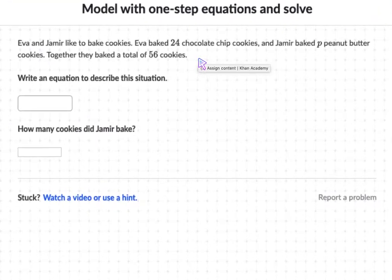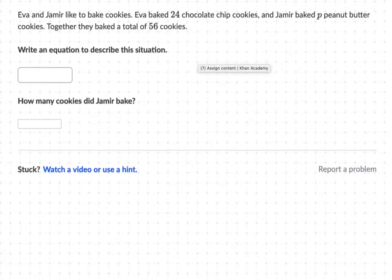Alright, here is our first example. In this problem we have Eva and Jameer baking cookies. Eva baked 24 chocolate chip cookies and Jameer baked peanut butter cookies. Together they baked a total of 56 cookies. You have to write an equation to describe the situation and you have to figure out how many cookies Jameer baked. Go ahead and pause the video and try it on your own first.